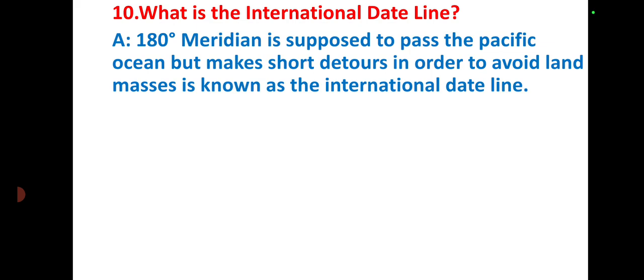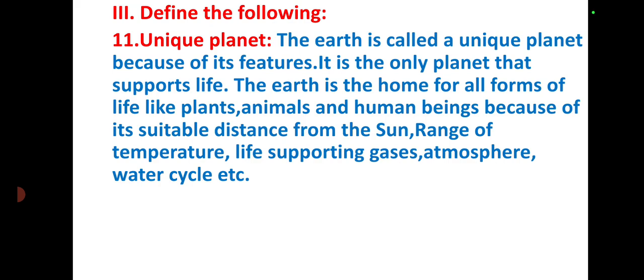Define the following: Unique planet. The Earth is called a unique planet because of its features. It is the only planet that supports life. The Earth is home for all forms of life like plants, animals, and human beings because of its suitable distance from the Sun, range of temperature, life-supporting gases, atmosphere, water cycle, etc.